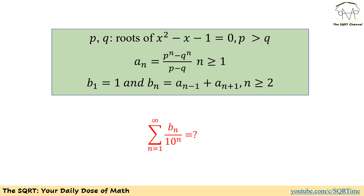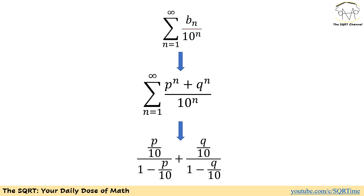Now let's review what we wanted to find: the sigma of Bₙ over 10 to the power of n, from n equals 1 to infinity. Writing Bₙ as P to the power of n plus Q to the power of n, we split the sum into two geometric series: (P/10) to the power of n and (Q/10) to the power of n. Since P/10 and Q/10 are both less than 1, we can write the whole sum as (P/10)/(1 minus P/10) plus (Q/10)/(1 minus Q/10).